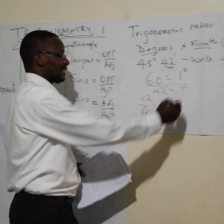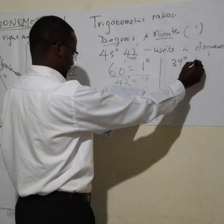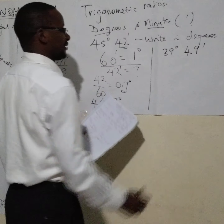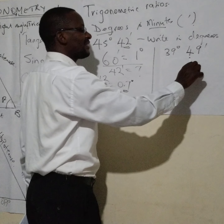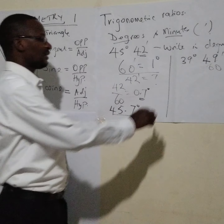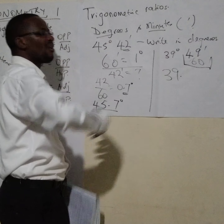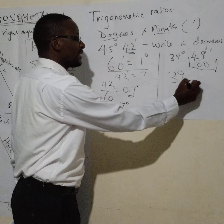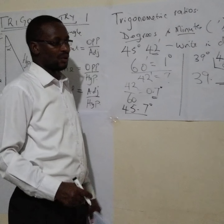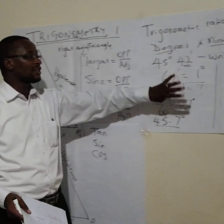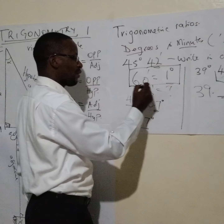Let's change one more: 39 degrees 49 minutes. By now you can use a shortcut — just divide the minutes part by 60. You may get a recurring or long decimal, so use two decimal places such that you have a number in four significant figures. That's how you do it — you can now change minutes to degrees. The only relationship you need is: 60 minutes equals one degree.